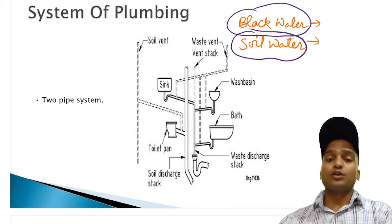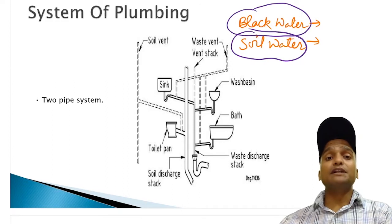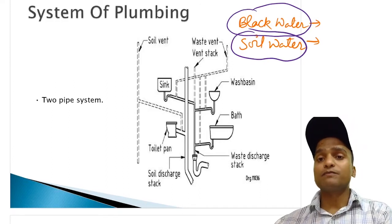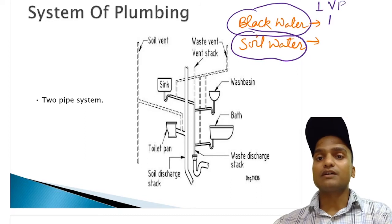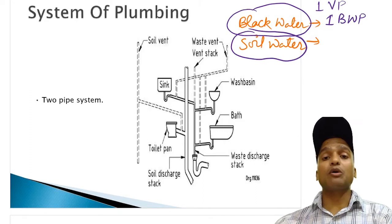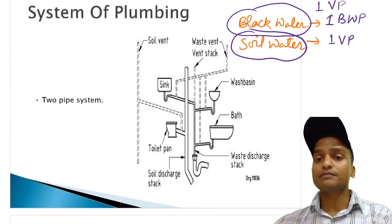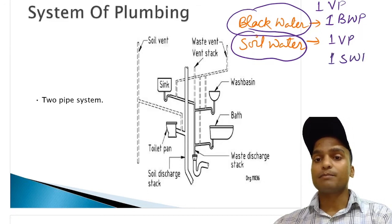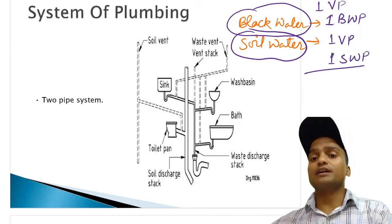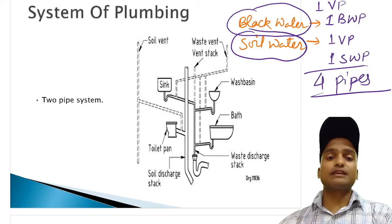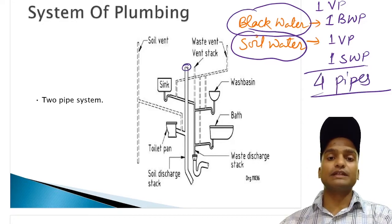For discharge of this black water, we provide a different pair of pipes. One pipe for the ventilation and one for waste water pipe or black water pipe. And also for the discharge of soil water, we provide one more additional separate pair of pipes. One for the ventilation pipe and one for the soil waste pipe. So total, there are four pipes. Just like you can see in this diagram.